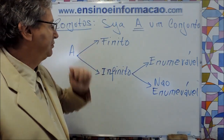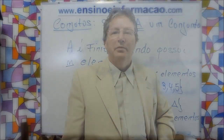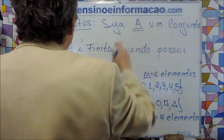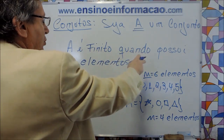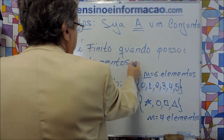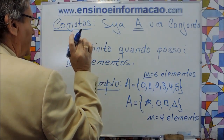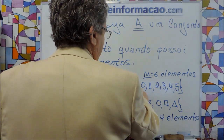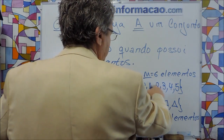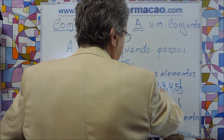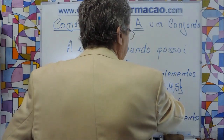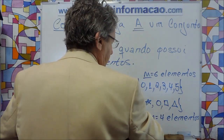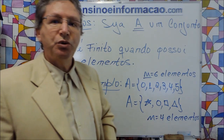Essa é a primeira distinção que a gente quer fazer. Então, vamos definir primeiro o que nós entendemos por conjunto finito. A é finito quando ele possui N elementos — um número finito de elementos. Um exemplo prático: A é o conjunto constituído dos elementos numéricos 0, 1, 2, 3, 4, 5. Não importa a ordem aqui — ele só tem seis elementos. Outro conjunto, constituído por símbolos, possui N igual a quatro elementos. Isso é um conjunto finito.